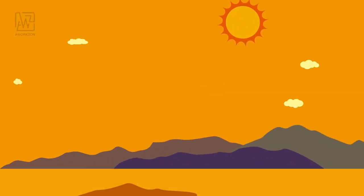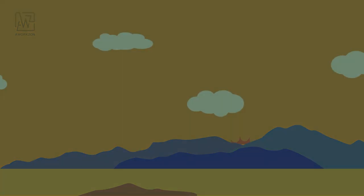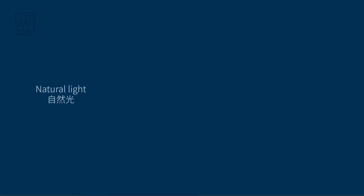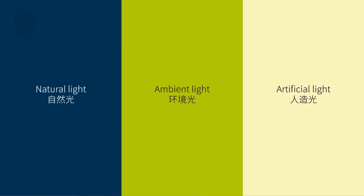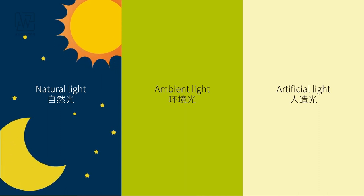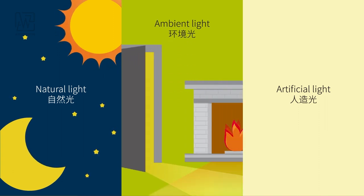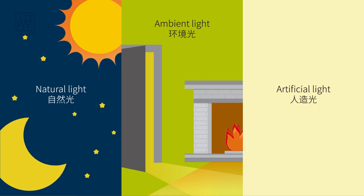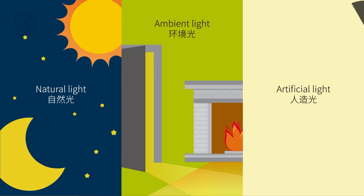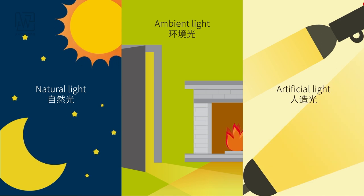In the field of photography, light is like the pigment of a painter — no light, no shooting. There are three kinds of light: natural light, ambient light, and artificial light. Natural light refers to direct or reflected light from the sun or other stars. Ambient light is the light a scene already has, such as lamp light or fireplace light. Because of the strong variability of these two, they are used carefully in commercial photography. Artificial light comes from professional lighting equipment and has a stable, highly adjustable source.